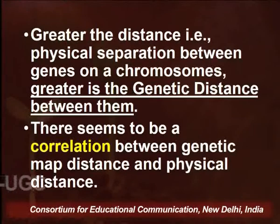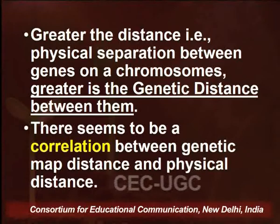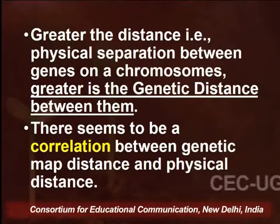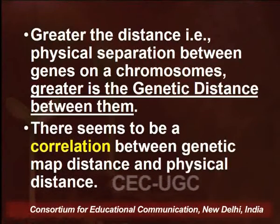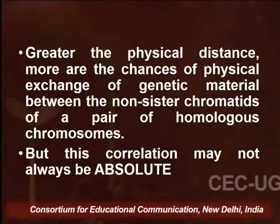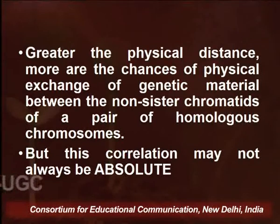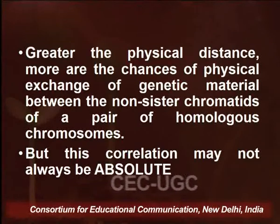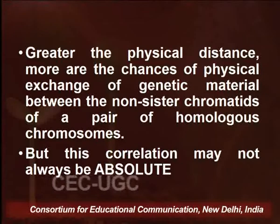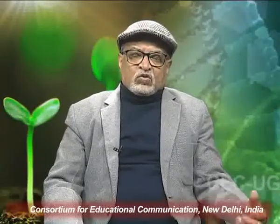When we choose a particular distance, we should be concerned about what this distance really means in terms of the strength of linkage. Greater the distance — the physical separation between genes on a chromosome — greater is going to be the genetic distance between them. So there is some sort of correlation between the genetic map distance and the physical distance. But please understand, they are not synonyms. Greater the physical distance, more would be the chances of actual physical exchange of genetic material between non-sister chromatids. However, this correlation may not always be absolute.